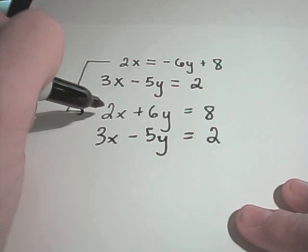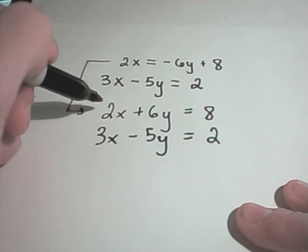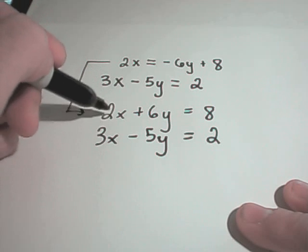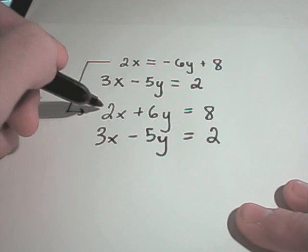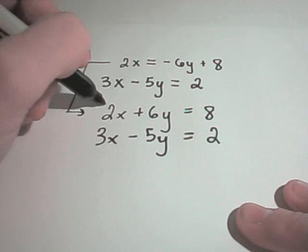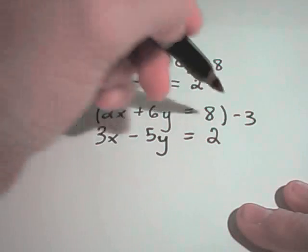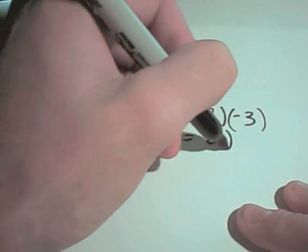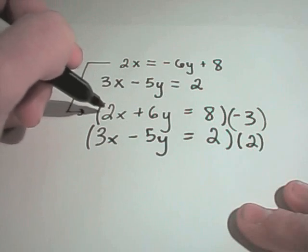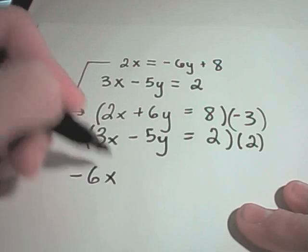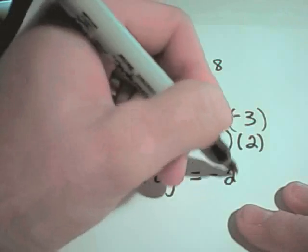And now it looks like even if I multiply one or the other by a negative, things aren't going to cancel out. But I can make changes to both of them to make things cancel. So I'm going to multiply the first one by everything by negative 3. And I'm going to multiply the second one just by positive 2. So notice if I multiply everything by negative 3, I'll get negative 6x, negative 18y, and negative 24.